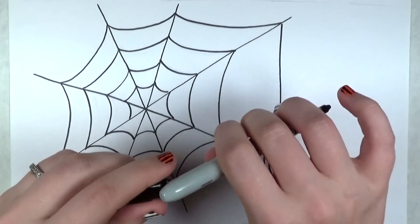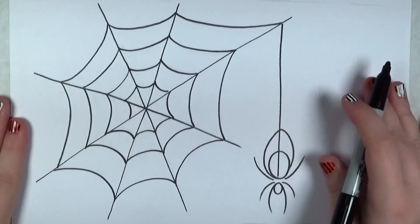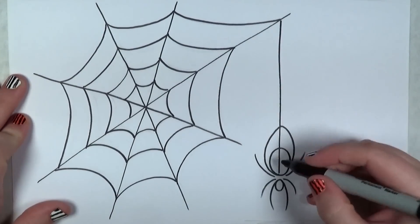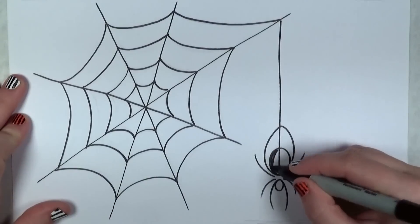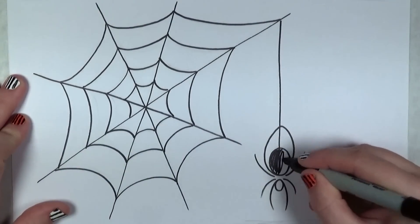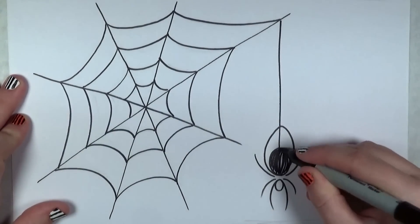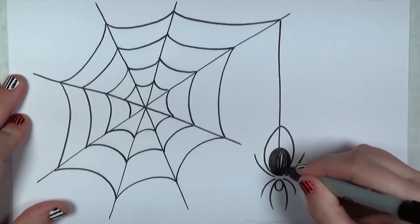So once you're all done erasing your pencil lines, you can see you've got this lovely delicate spider web and dainty spider hanging from the edge of it. I'm just going to color this one in black. This is a nice simple black and white drawing.